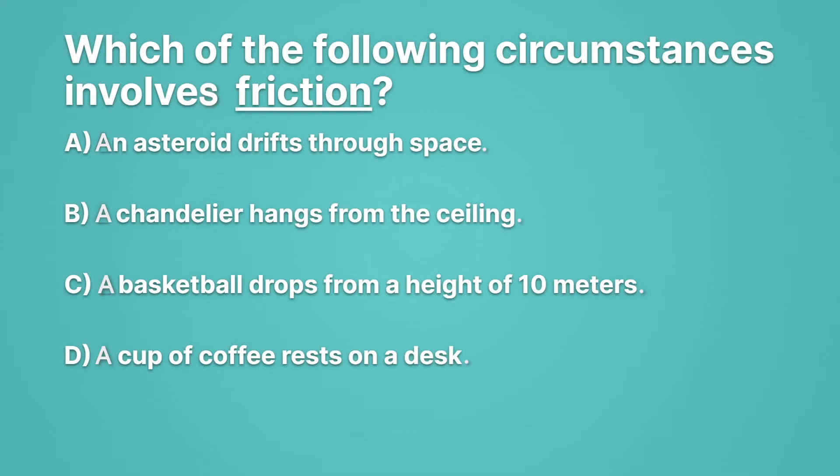A basketball drops from a height of 10 meters. Now there's motion. Something dropping. And it's in contact with the air. So we have air resistance. So that's going to have friction. Lastly, we have a cup of coffee rests on a desk. There, once again, no motion. So no friction. So C is the correct answer. A basketball that's dropping from a height of 10 meters will have the friction force.